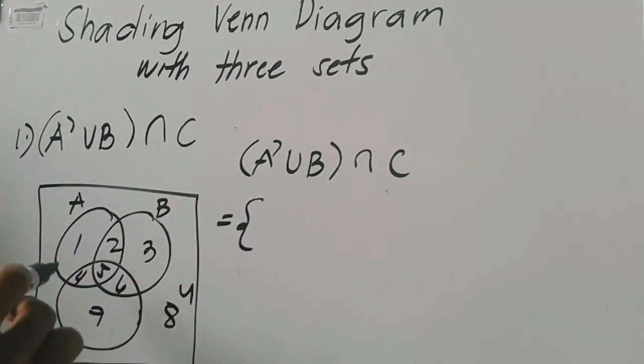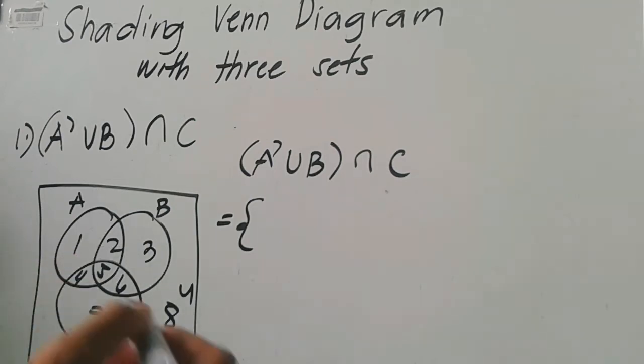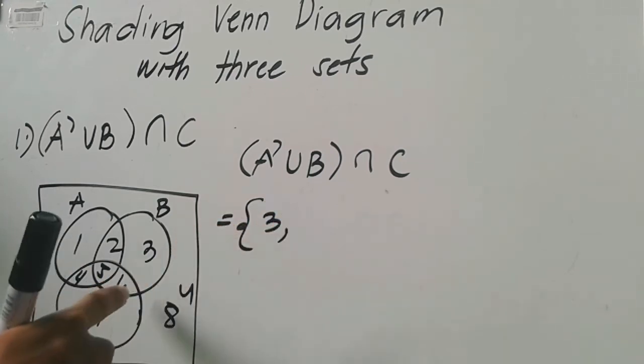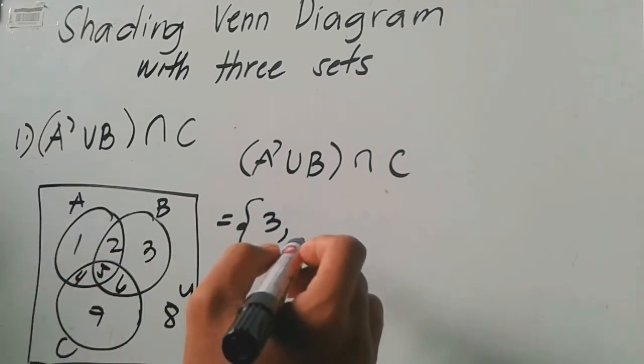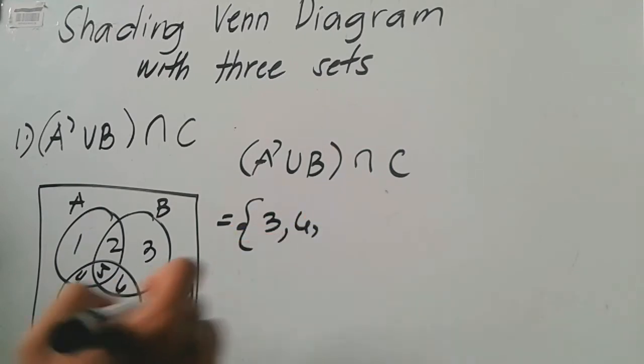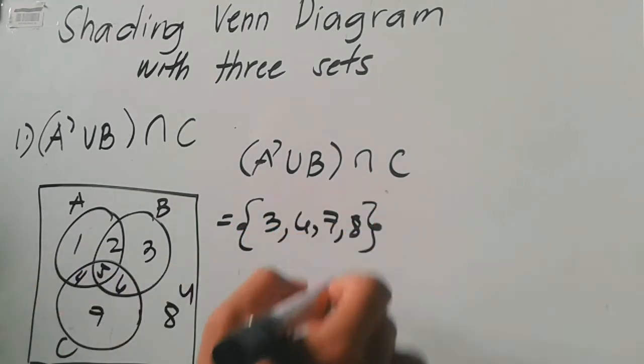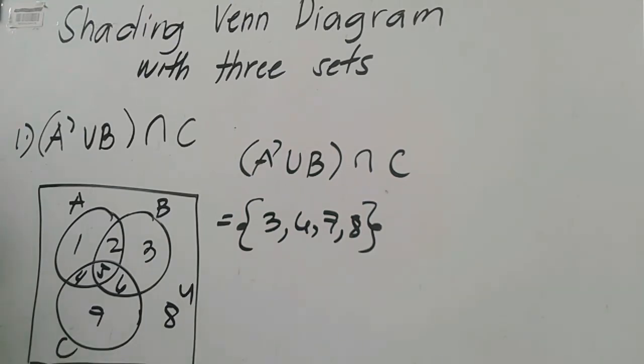Lahat ng wala sa A. So ang A natin ngayon ang setting is one, two, four, five. So ang wala sa A ay meron tayong three, six, seven, and eight, yung wala sa A.